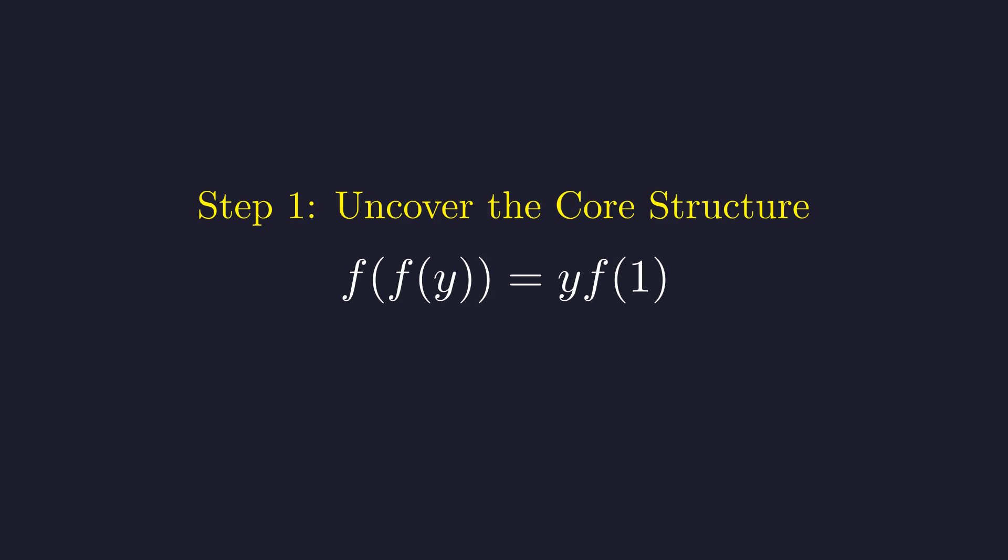Since our function maps positive reals to positive reals, we know that c must be greater than 0. This relationship, f of f of y equals c times y, is actually a major breakthrough. It tells us the function is bijective, meaning it's both 1 to 1 and onto. Let me show you why this is true.